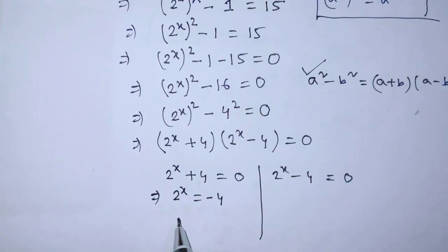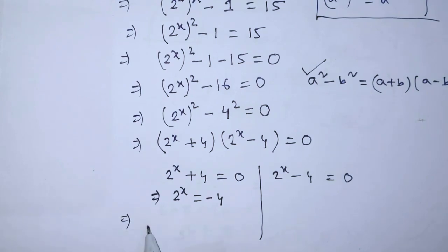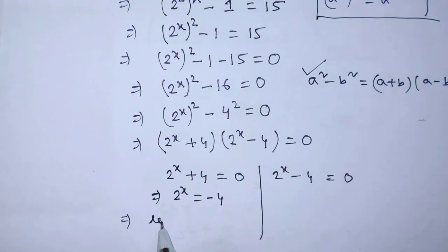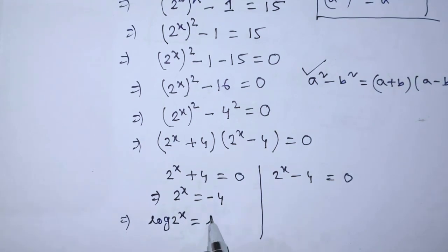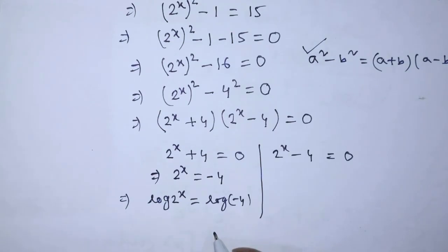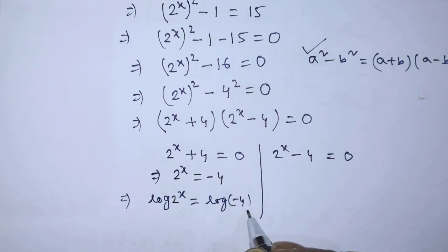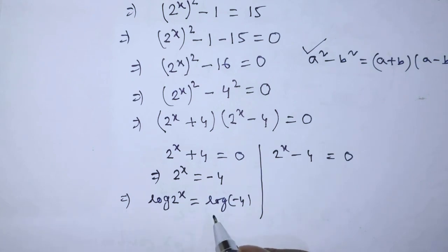From the first equation, 2 to the power x is equal to minus 4. To find the value of x, we take log on both sides. After taking the log on both sides, we get log of 2 to the power x is equal to log of minus 4. On the right hand side, log of minus 4 is undefined. So in this equation, x has no real solution.